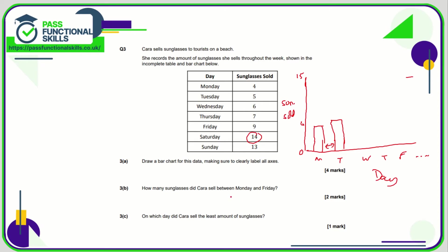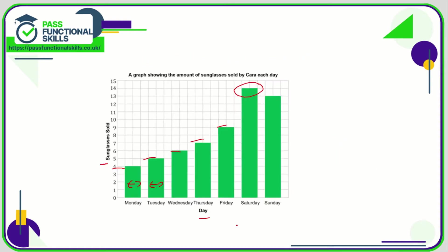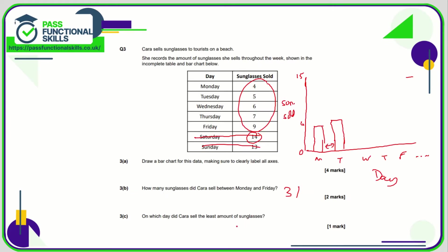How many sunglasses did Cara sell between Monday and Friday? Get rid of Saturday and Sunday, simply add these numbers together for a total of thirty-one. On which day did she sell the least amount? Look at which bar is shortest, that's the Monday one. Or look at your table for the lowest number, which is Monday.